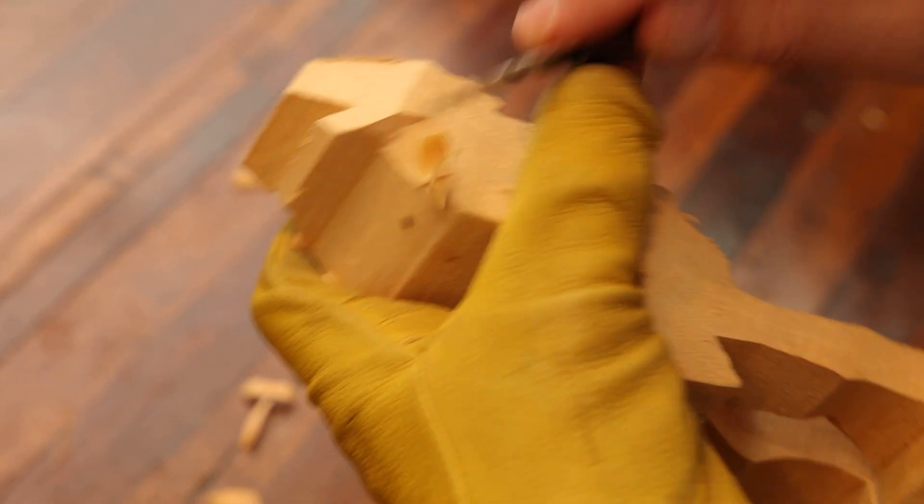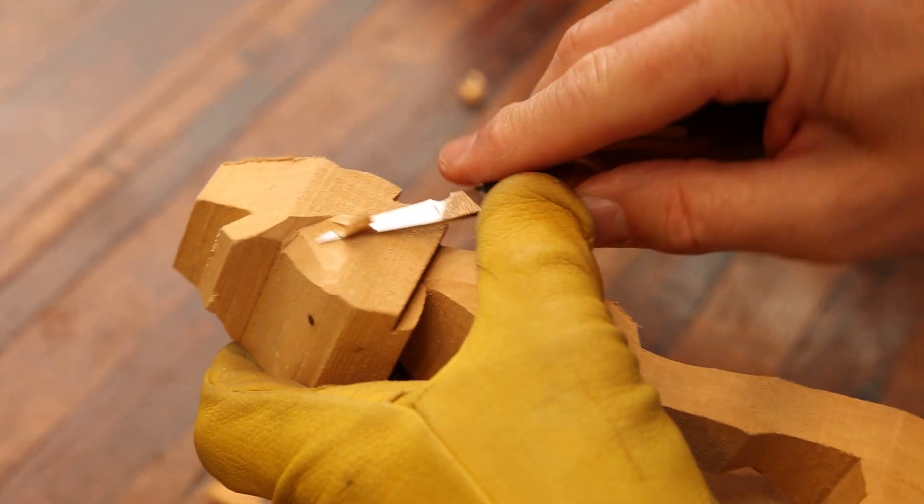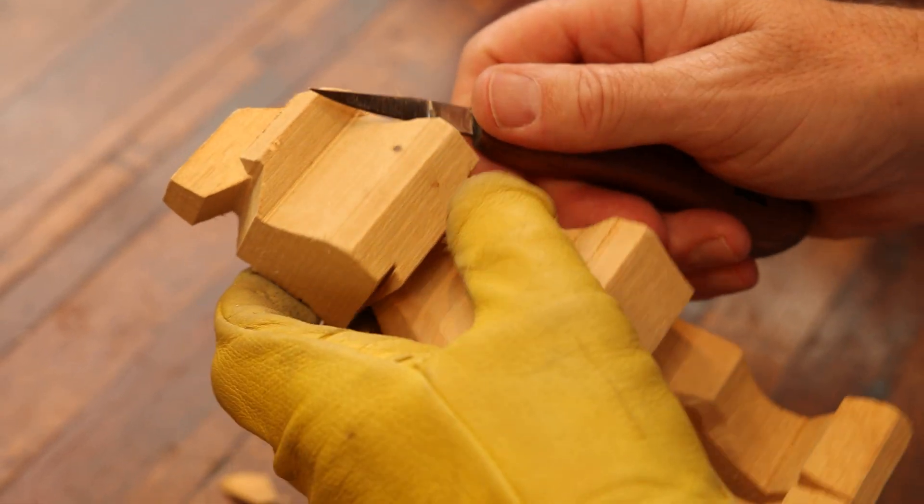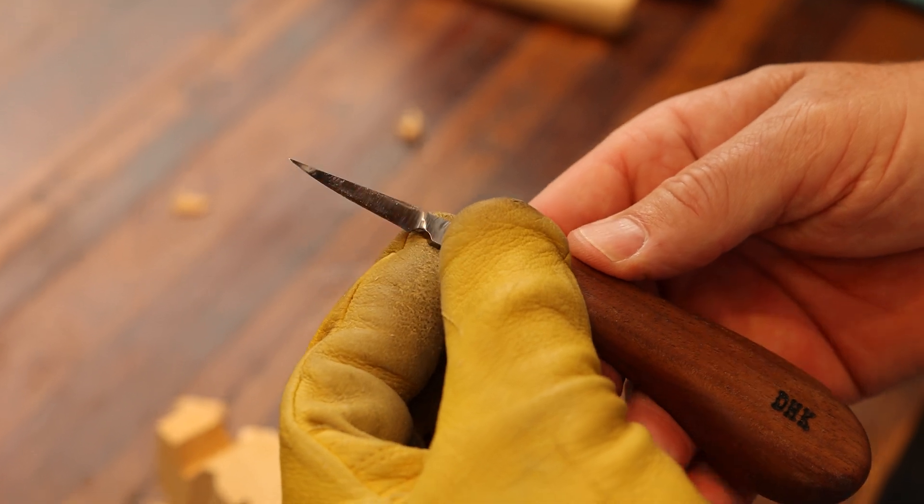So again, this is not made for roughing out like our first knife that we showed you, but this is for undercutting, creating shadows, and it's just a great all-around little knife to be able to help you become a better carver.